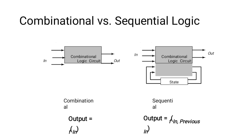Before going further, we must know what combinational and sequential circuits are. A combinational circuit's output depends only on the present input — changes at the input are immediately reflected at the output. In a sequential circuit, you have to consider previous input as well as current input. That feedback represents your previous state. So the basic difference is: combinational depends only on present input, while sequential depends on present and previous input.